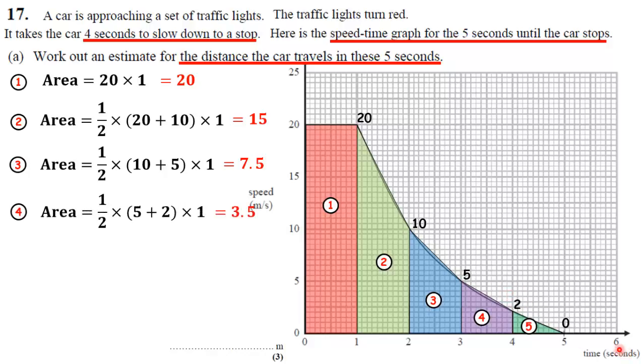And that's going to be 3.5. And then the last shape at the end here, if you look at that, that's not quite a trapezium. It is a triangle. The height of that triangle is 2, the base of that triangle is 1. Right. So a half base times height. Okay. And that gives us 1.